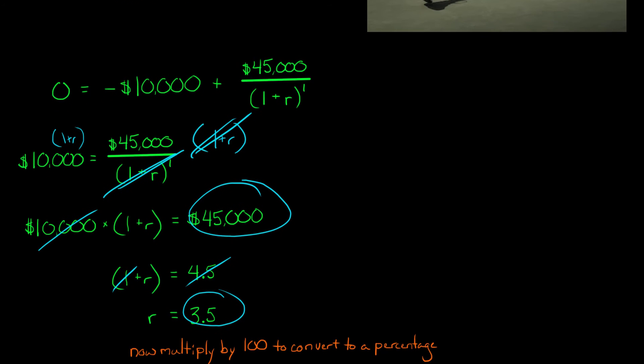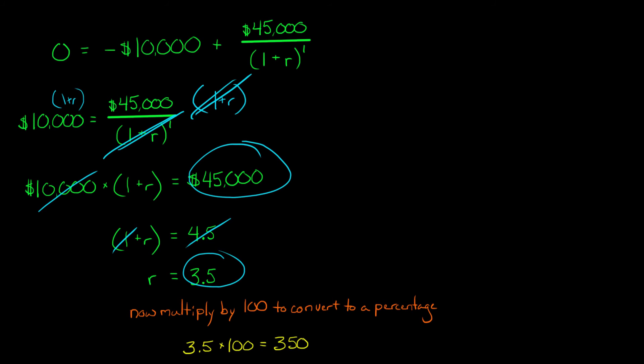Now you wouldn't tell somebody that the IRR of a project is 3.5. So what you need to do now that you have this figure of 3.5, that's the internal rate of return. That's the R that would make the NPV of this project equal to zero.